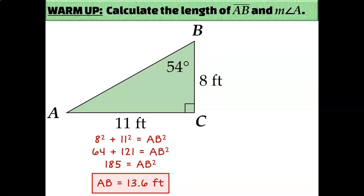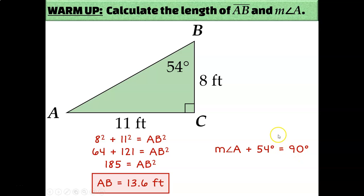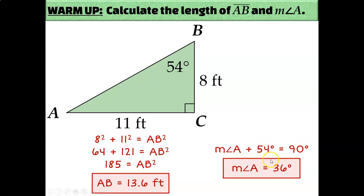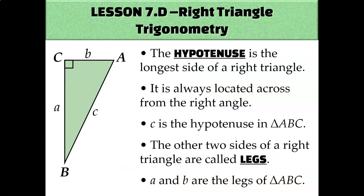What about the measure of angle A? Since it's a right triangle, I can use the corollary to the triangle sum theorem to say the sum of the two acute angles must be 90 degrees. You could also use the triangle sum theorem: 90 plus 54 plus the measure of angle A equals 180. Either way, you get the same answer of 36 degrees. We'll need to know how to solve for side lengths and angle measures, as well as some general vocabulary.